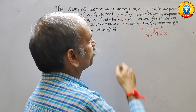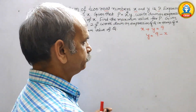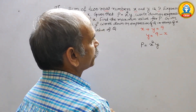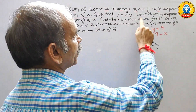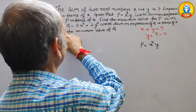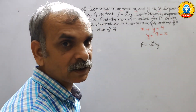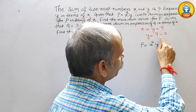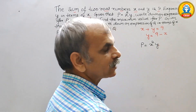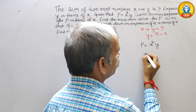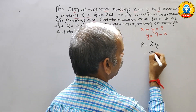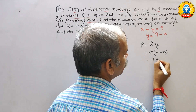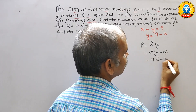Next, they have given p is equal to x squared y. They have told us to write down an expression for p in terms of x. So instead of y we will write 9 minus x. So now it will be x squared into 9 minus x, which equals 9x squared minus x cubed.